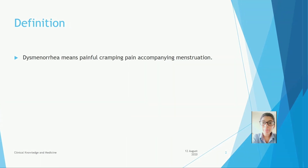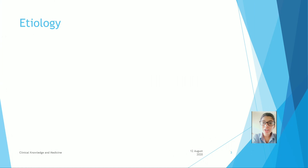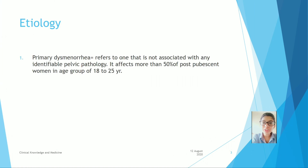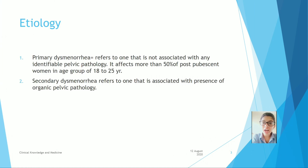Etiology: Primary dysmenorrhea refers to one that is not associated with any identifiable pelvic pathology. It has affected more than 50% of post-pubescent women in the age group of 18 to 25 years. Secondary dysmenorrhea refers to one that is associated with presence of organic pelvic pathology.